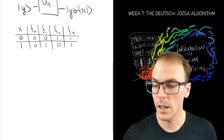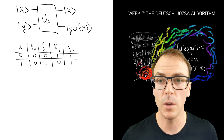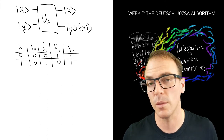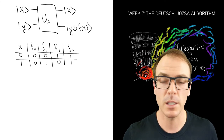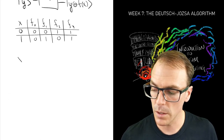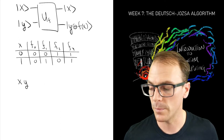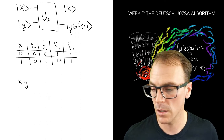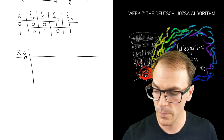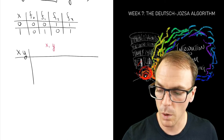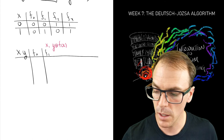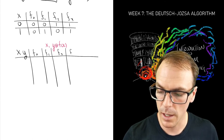Let's see how this circuit has to work. We don't know what U is, but we'll figure it out by looking at the input-output relationship. Determining the input-output relationship on an entire basis specifies the unitary, so once we do that we can determine what that unitary is. The input is x, y — the bit values of the input state — and the output is x and y plus f(x). We'll look at what that is for f_0, f_1, f_2, and f_3.